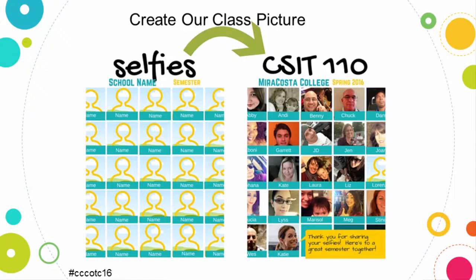Now some picture examples. The very first assignment I have students do is send me a file — they get practice submitting a file to the system, but the file they're sending is a selfie. We create our class picture. I post a template so they know what I'm going for. They each submit a JPEG that I compile into our class picture. Then I put myself at the bottom: 'Thank you for sharing your selfie. Here's to a great semester together.' This is a fully online class — we're never together, but at least here visually we're together, all in this learning experience.